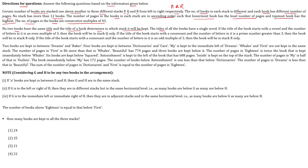The titles of all the books have a single word. If the title starts with a vowel and the number of letters is an even multiple of three, then the book will be in stack Q only. If the title starts with a consonant and the number of letters is a prime number greater than three, then the book will be in stack R only. If the title starts with a consonant and the number of letters is an odd multiple of three, then the book will be in stack R only.